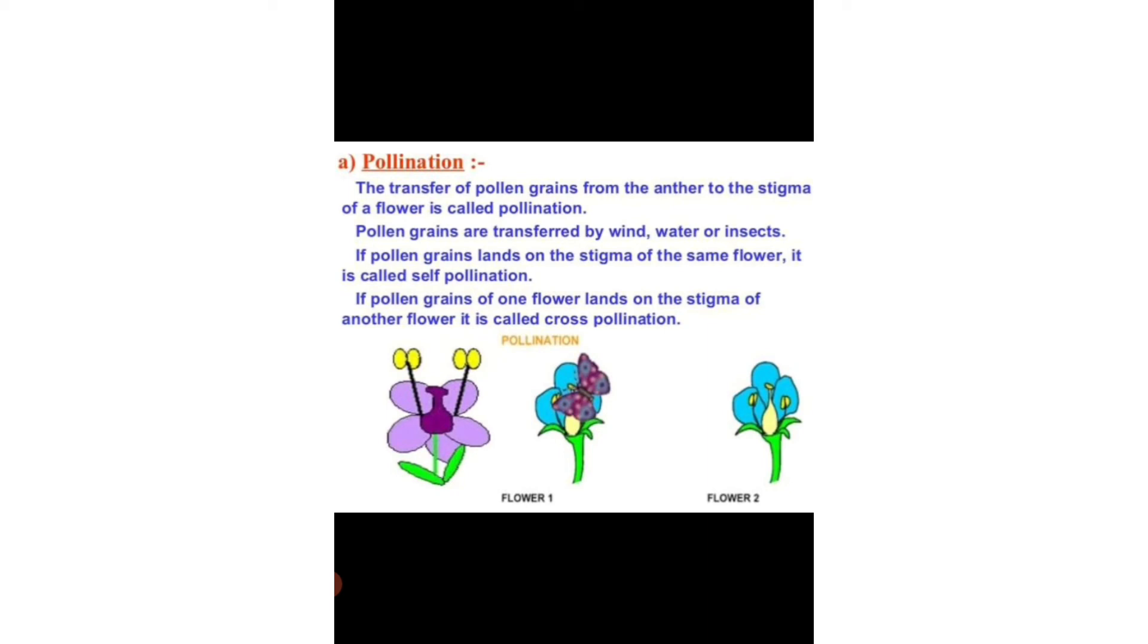If pollen grains land on the stigma of the same flower, it is called self-pollination. Whereas if pollen grains of one flower land on the stigma of another flower, it is called cross-pollination.